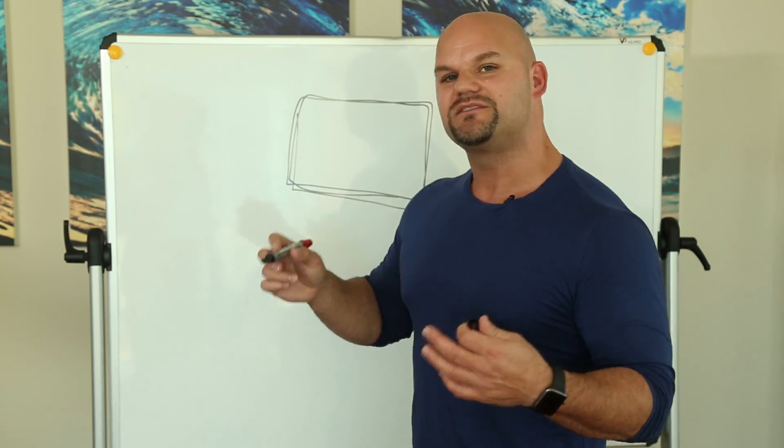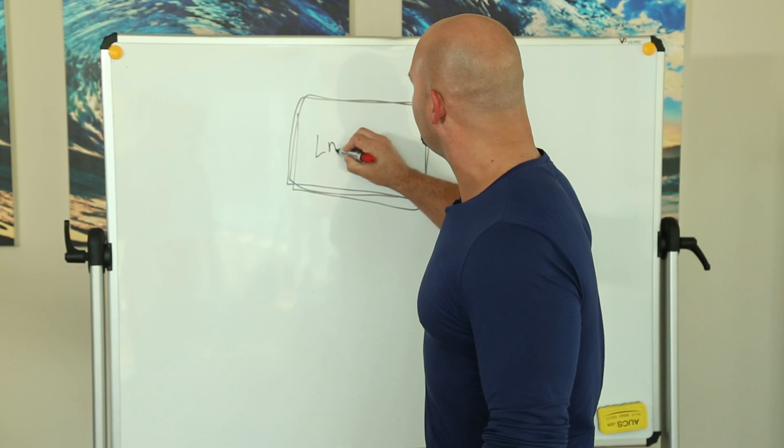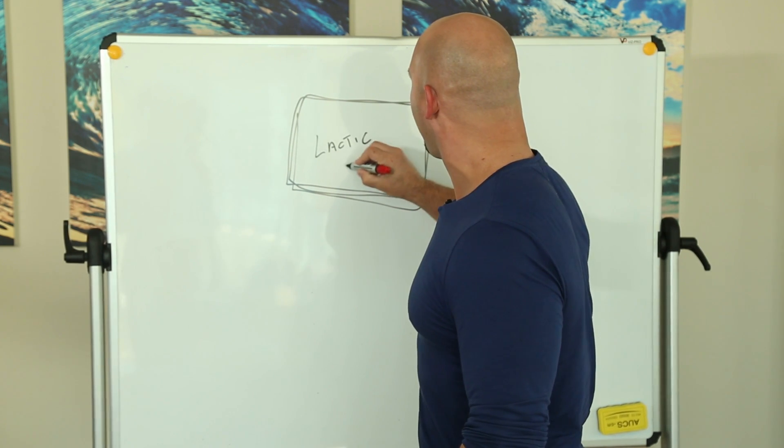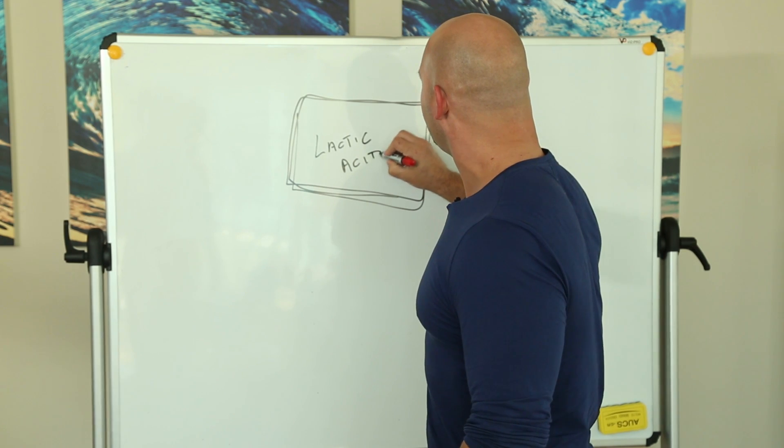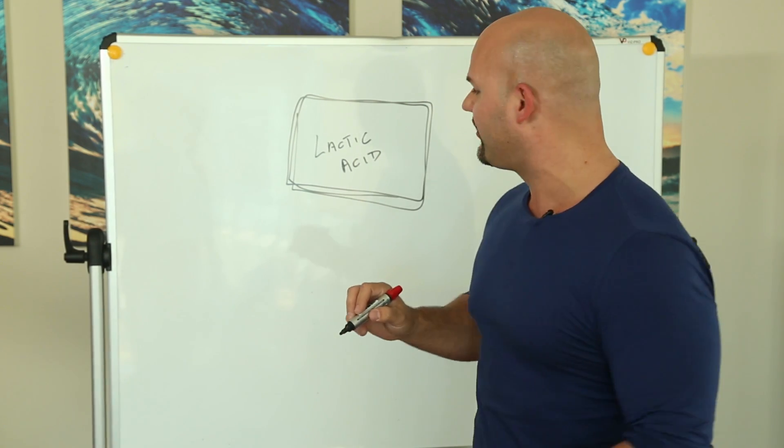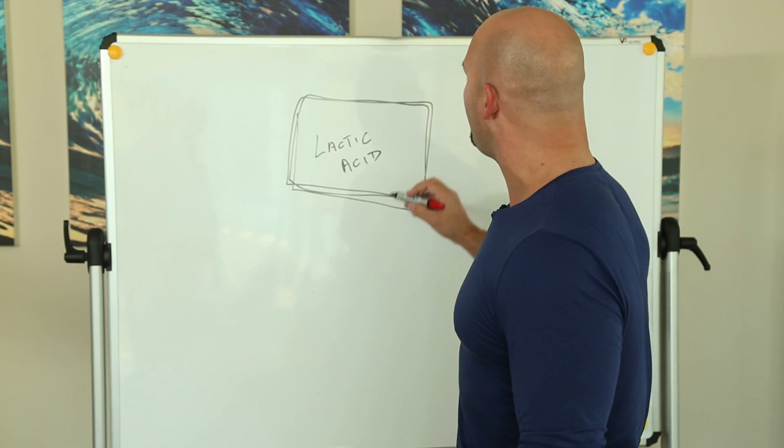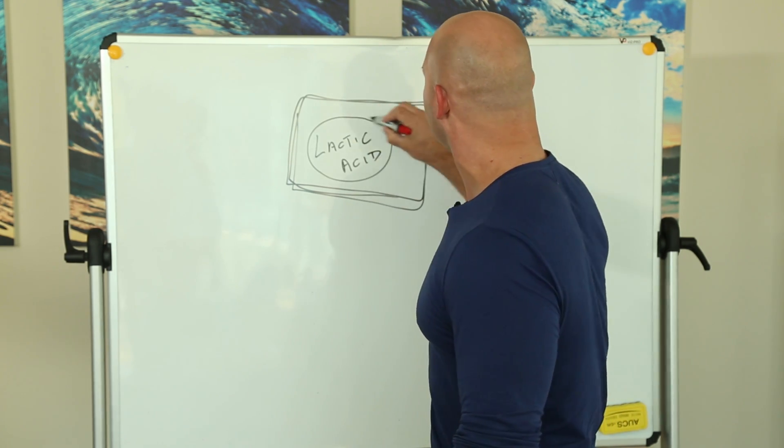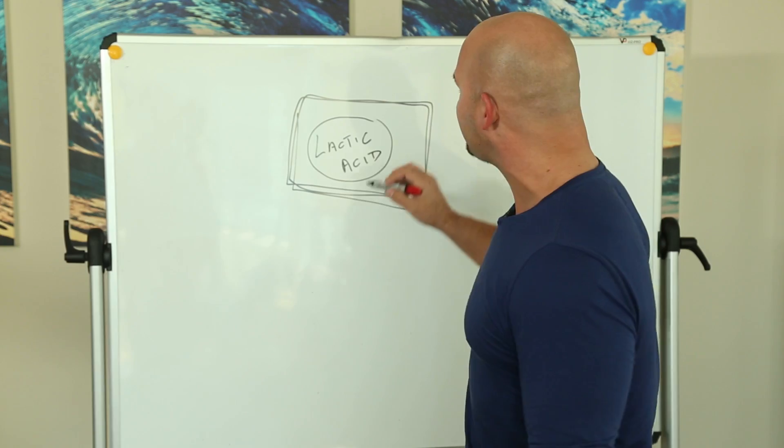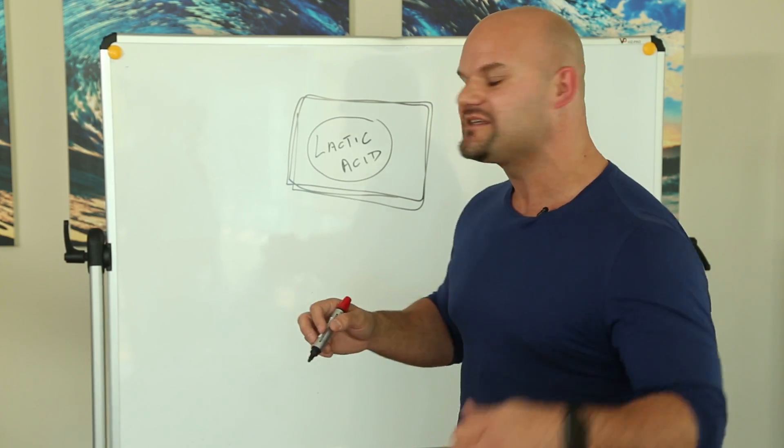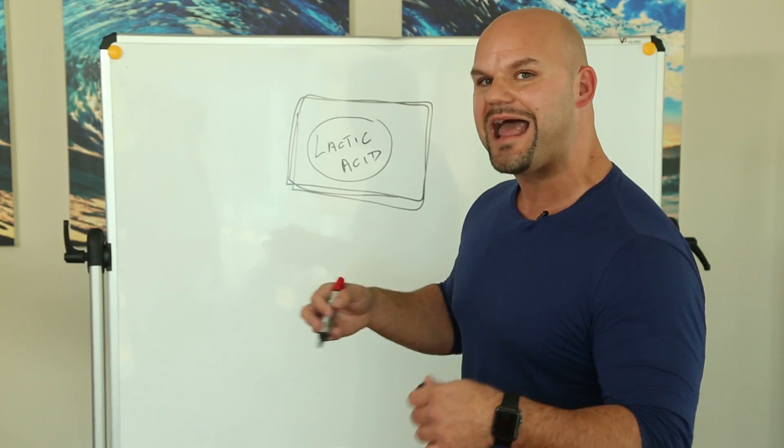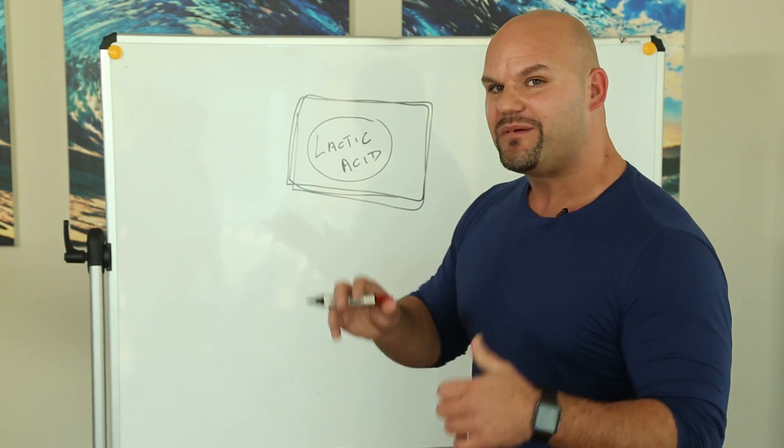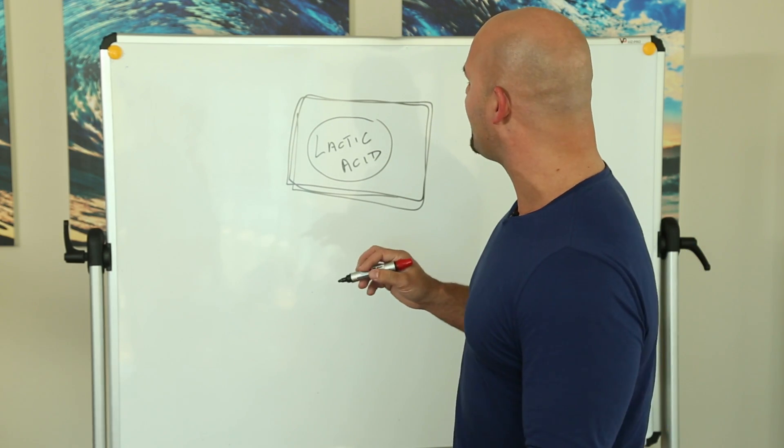So as this muscle begins to contract, you begin to produce lactic acid, which doesn't cause the burn, but actually protects against the burn. Lactic acid is useful because now we can use this as an alternate fuel source. Your body can actually burn lactate just like it burns glucose, allowing you to last longer. But that's not why lactic acid is so powerful.